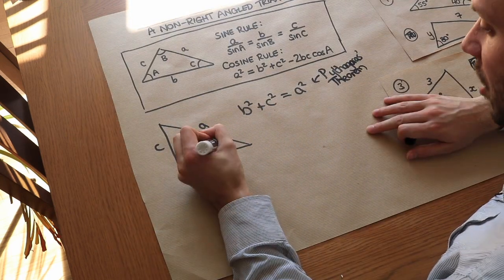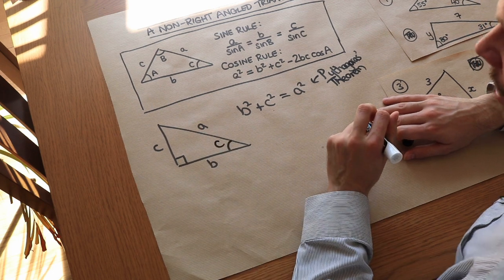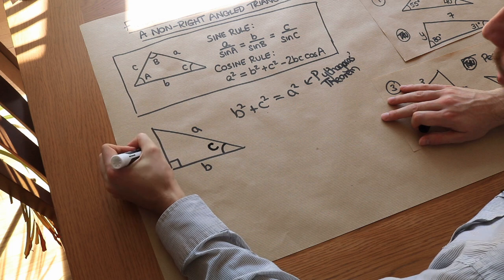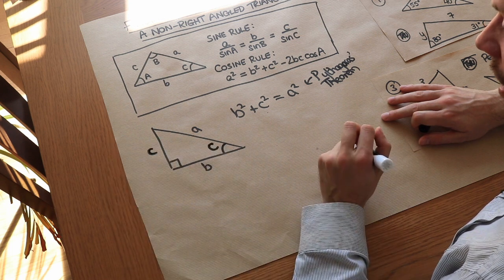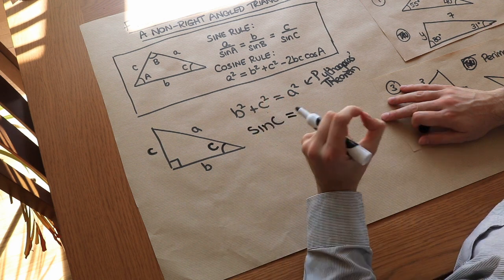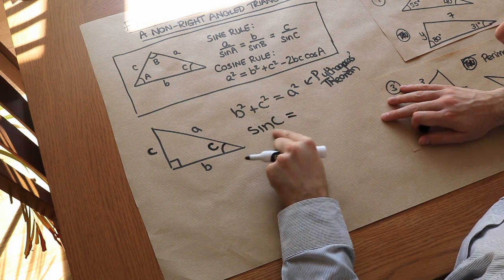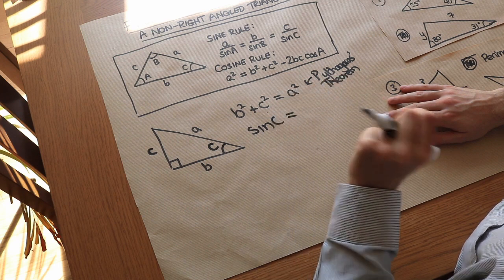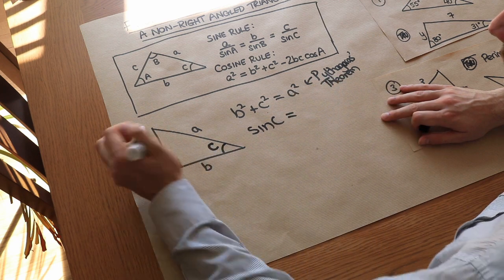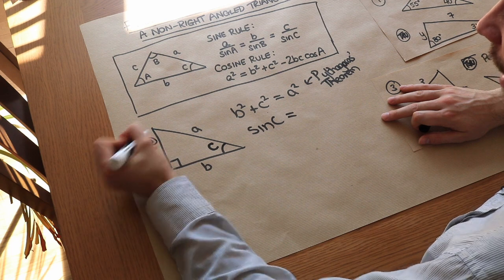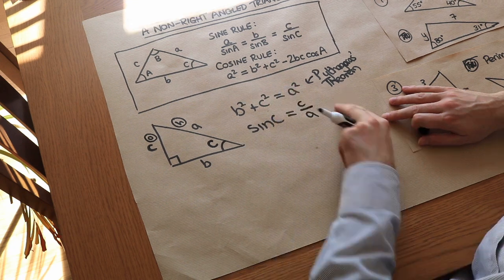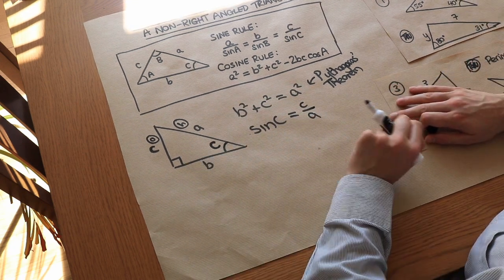Similarly, we could use trigonometry to find angles. If we make this angle capital C, then we can use SOH CAH TOA. Sine of angle C is opposite over hypotenuse — so sine of C equals c over a. But these rules are only true if we have a right-angled triangle.